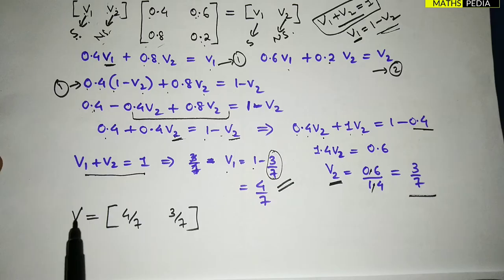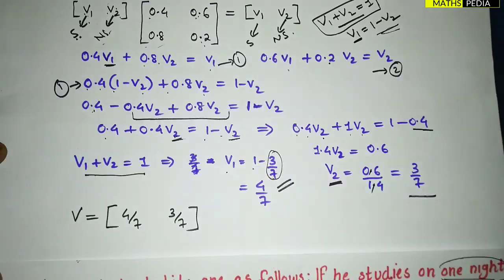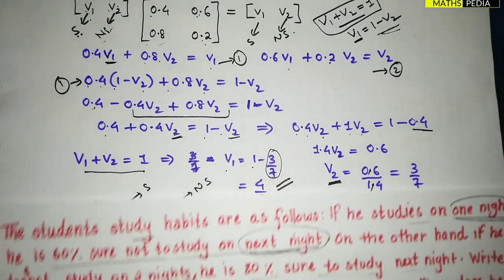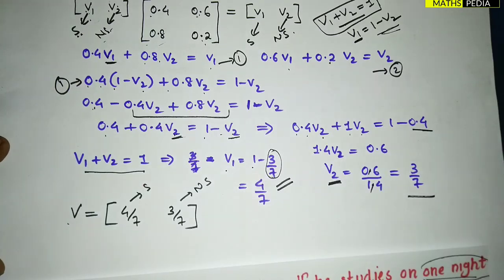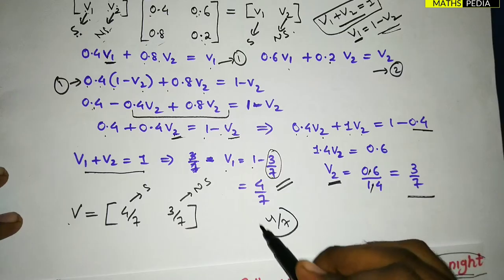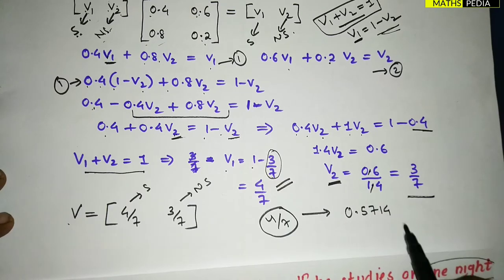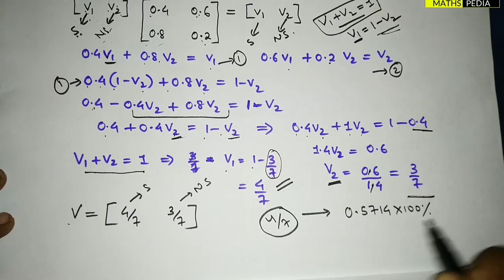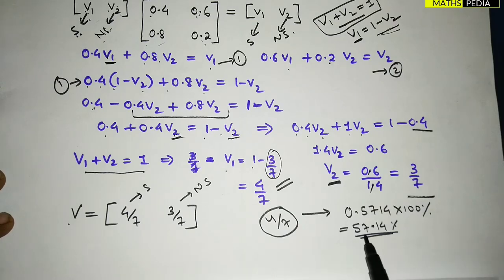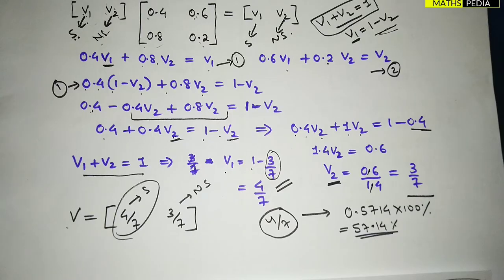The fixed probability vector v = [4/7, 3/7], where 4/7 corresponds to the Study state and 3/7 to Not Study. Since the question asks how often he studies in the long run, the answer is 4/7 ≈ 0.5714, which is 57.14%.